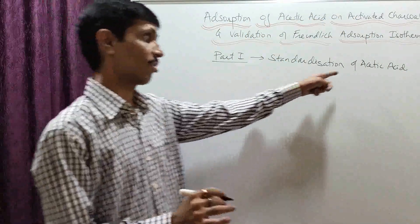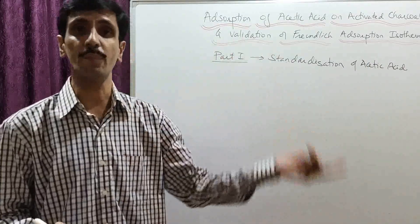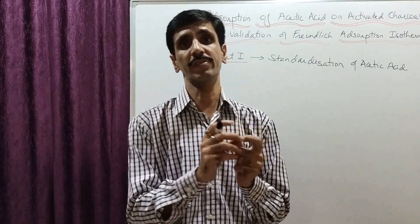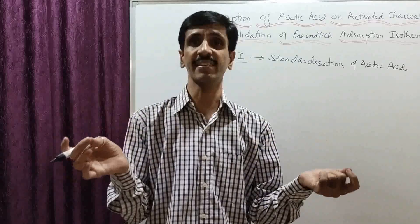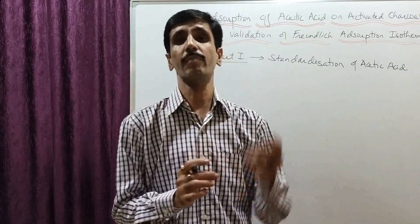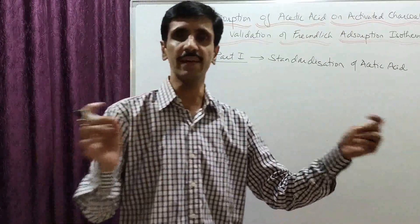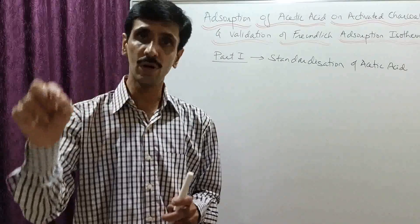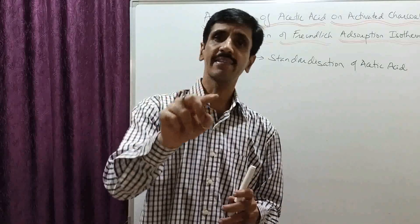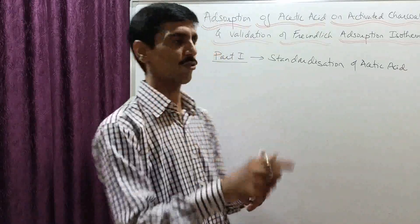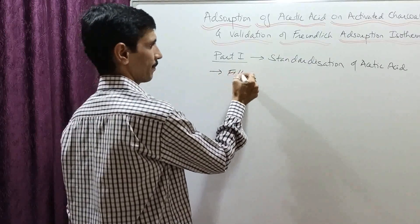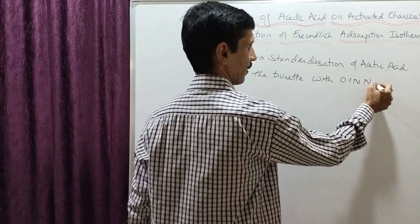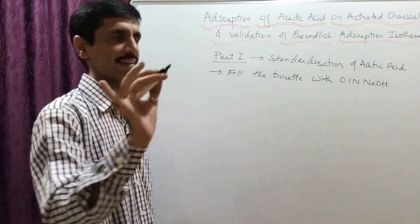The procedure for standardization is simple: since acetic acid is an acid, it has to be titrated against a base. Standardization is the process of exact determination of the concentration of a solution. We don't know the exact concentration of acetic acid, so we find it out by titrating against 0.1 normal NaOH, whose exact normality is known. Step 1: fill the burette with 0.1 normal NaOH.